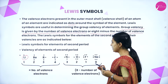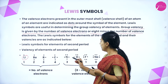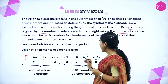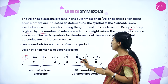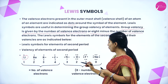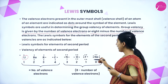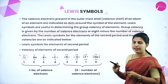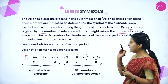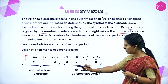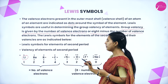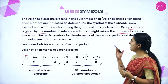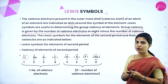Valency is given by the number of valence electrons or 8 minus the number of valence electrons, as indicated by Lewis symbols. These are the second period elements present in the periodic table. According to the Kossel-Lewis approach, atoms of different elements combine based on their nature to form different types of chemical bonds.